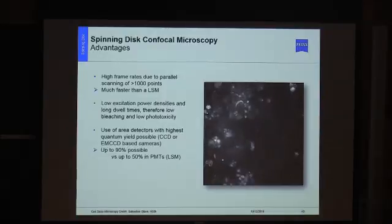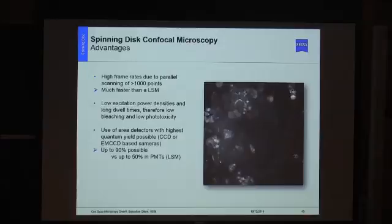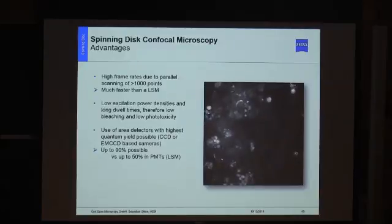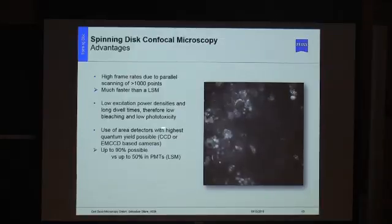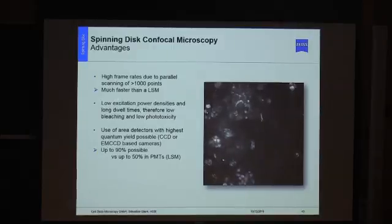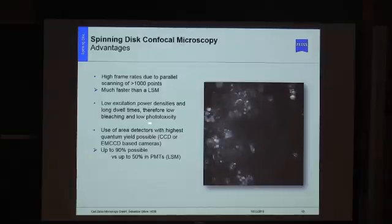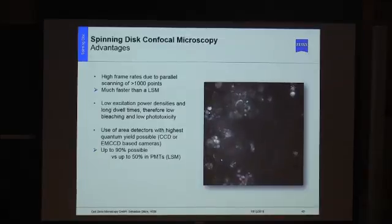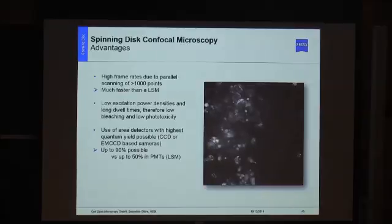The spinning disk system is much faster than a confocal point scanning microscope. If speed is your main objective and you still want confocal-quality imaging, you should use a spinning disk system. Another advantage is that you can use lower excitation powers compared to a confocal scanning system, giving less bleaching and lower phototoxicity. Additionally, you can use camera detectors with quantum efficiency up to 90%, whereas conventional laser scanning microscopes with PMTs hardly reach 50%. So if you want to image dim samples and image them very fast, the spinning disk is the way to go.